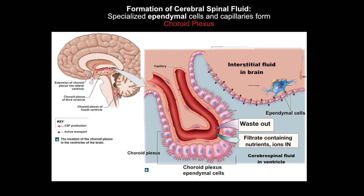A healthy, functioning brain requires a highly controlled chemical environment. The interstitial fluid in contact with neurons is filtered from the blood using two main mechanisms: the blood-brain barrier, which we'll discuss next, and the creation of cerebral spinal fluid. The ependymal cells absorb the blood filtrate around the choroid plexus, make it safe for brain tissue, and secrete it into the ventricles as CSF. This safe filtrate can then exchange gases and nutrients with all the brain tissue surrounding the ventricles.